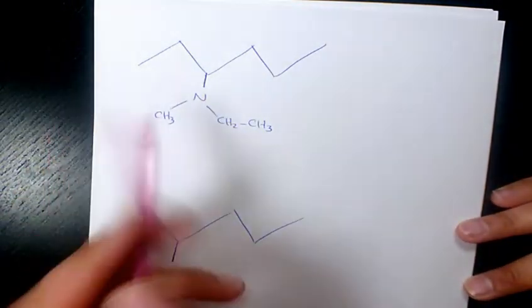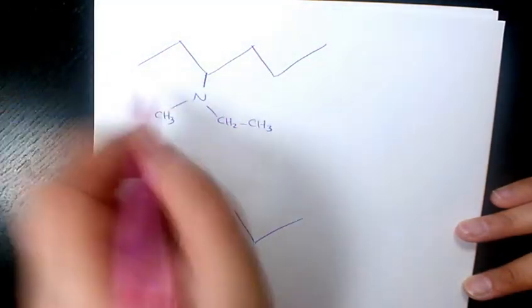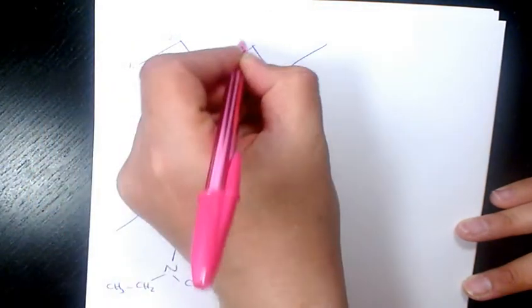So in order to name it, I need to number all these carbon atoms here. I start from this side because N gets the smallest number: one, two, three, four, five, and six.